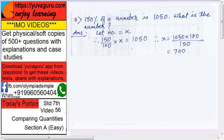150 percent of a number is 1050. What is the number? Let the number be x. Now 150 percent, percent means 100, so 150 upon 100 into x equals to 1050.